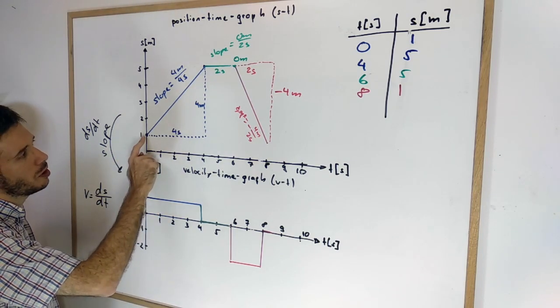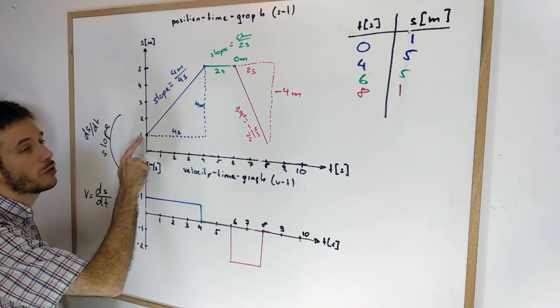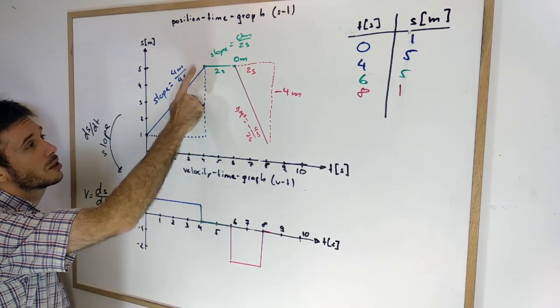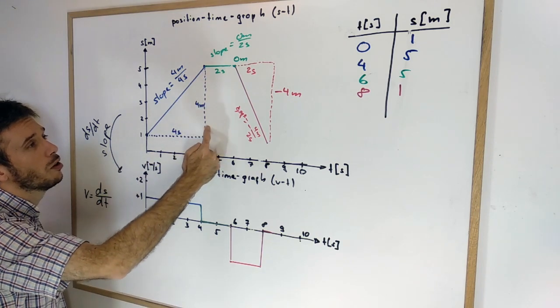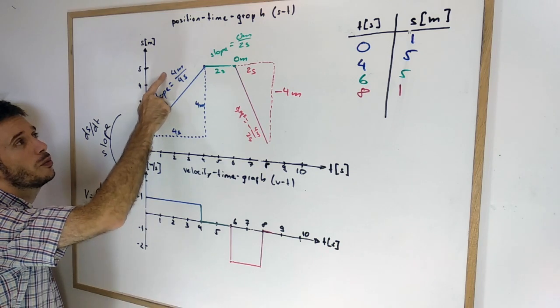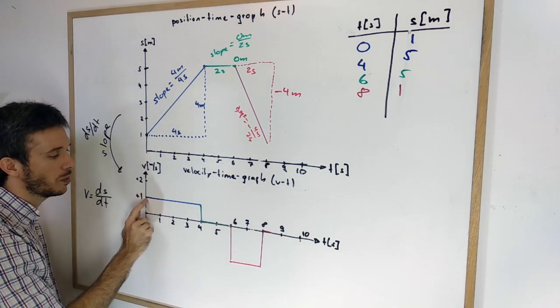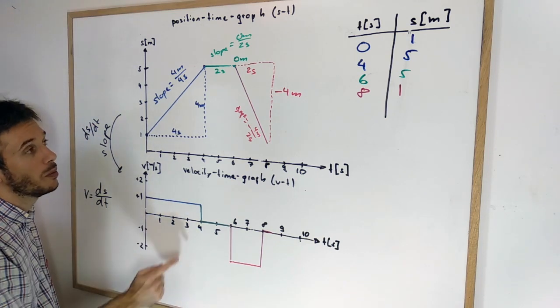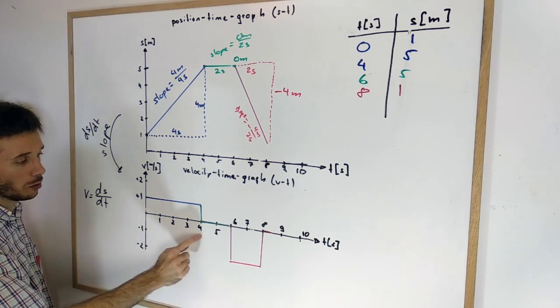For example, in the first part of the movement, in the first 4 seconds, I moved from position 1 meter to position 5 meters. So I had a rise of 4 meters over a run of 4 seconds. 4 meters over 4 seconds gives me 1 meter per second of velocity between 0 and 4 seconds.